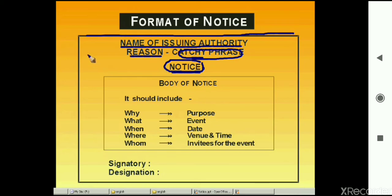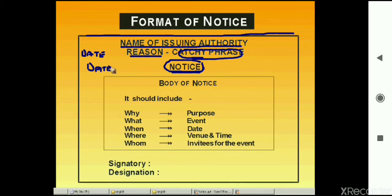The date can be written on this line, or it can also be written on the next line along with the word NOTICE. The layout of the notice should be such that it looks attractive and not messy. At times the date may be long — maybe the month of November or September — which might interfere with the caption and look clumsy. In that case, the date can be written on the third line, along with the line for NOTICE.